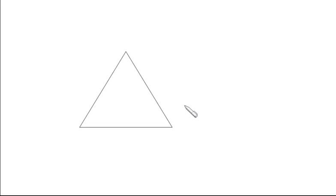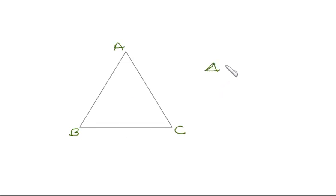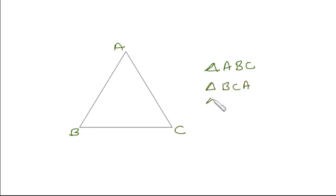Here we see a triangle. Let me label it — A, B, and C. So we call it triangle ABC, and we write it as triangle ABC. It can also be called triangle BCA or triangle CAB — any of these names works. A, B, and C are the three vertices of the triangle.